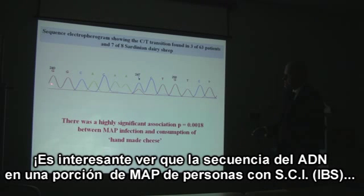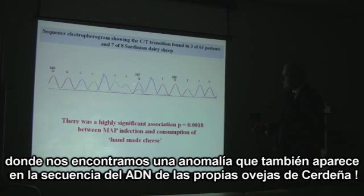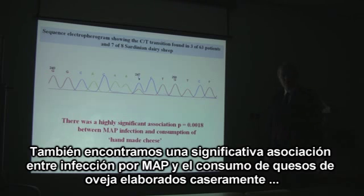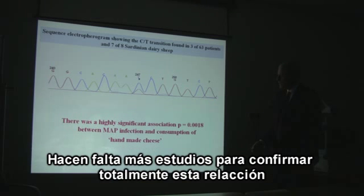Interestingly, this is the DNA sequence of the portion of the MAP bug from people with IBS. We found an anomaly here which was also found in sheep in Sardinia. We also found a significant association between MAP infection and the consumption of handmade cheese, though more research is needed to confirm this association.